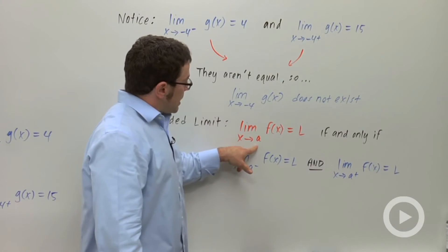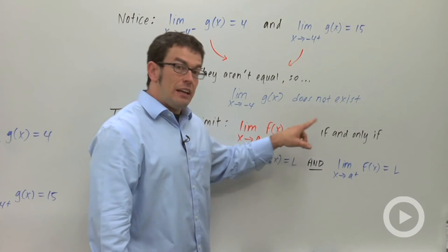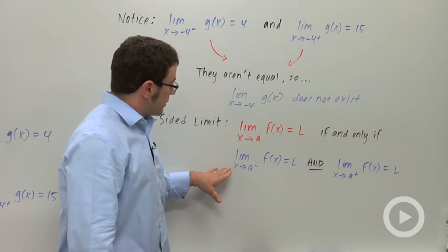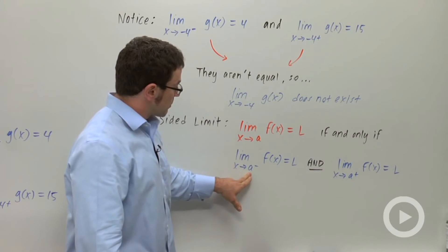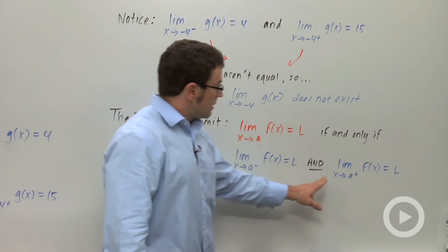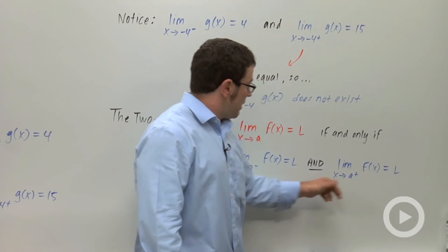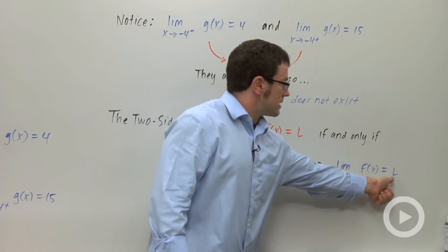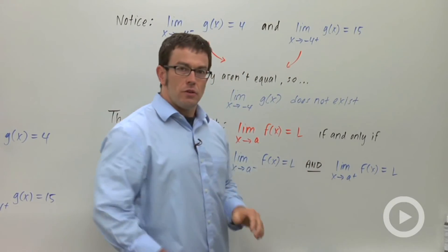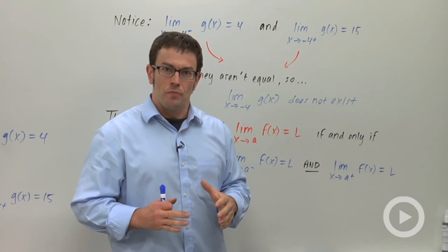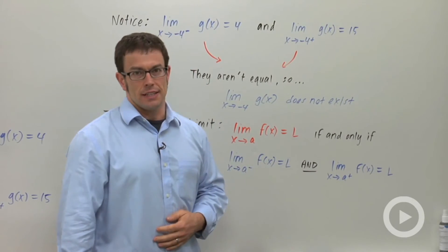Limit as x approaches a of f of x equals L if and only if the two one-sided limits, the limit as x approaches a from the left and the limit as x approaches a from the right of f of x equal L, the same number. Only if those two one-sided limits have the same value will the two-sided limit exist.